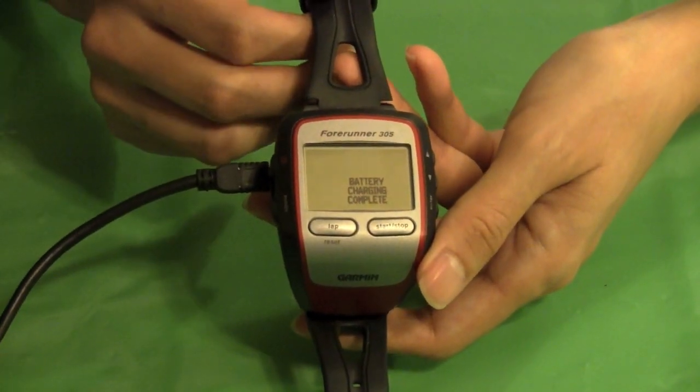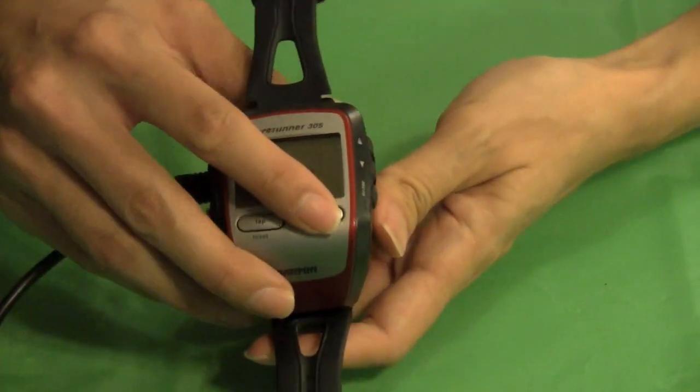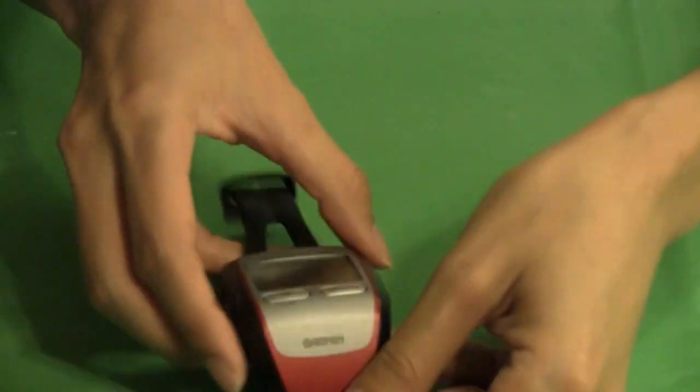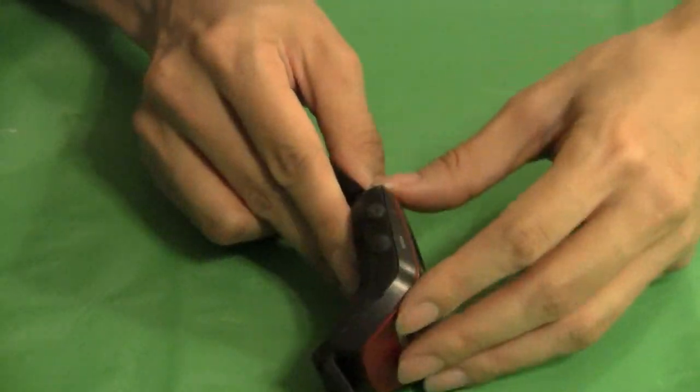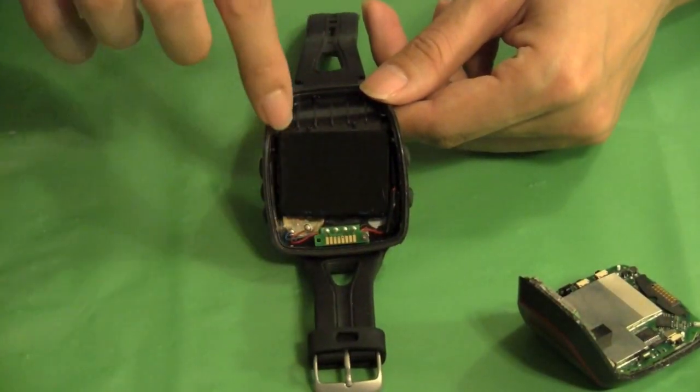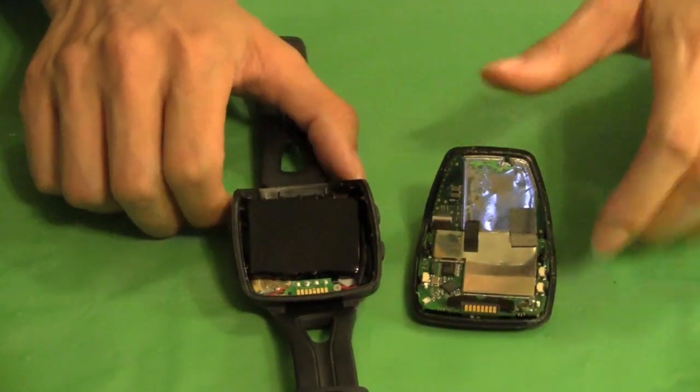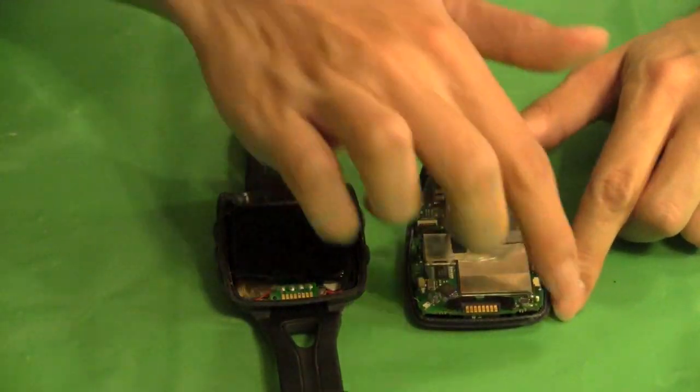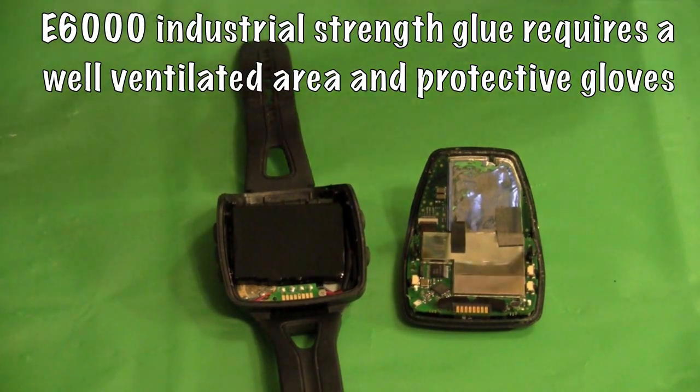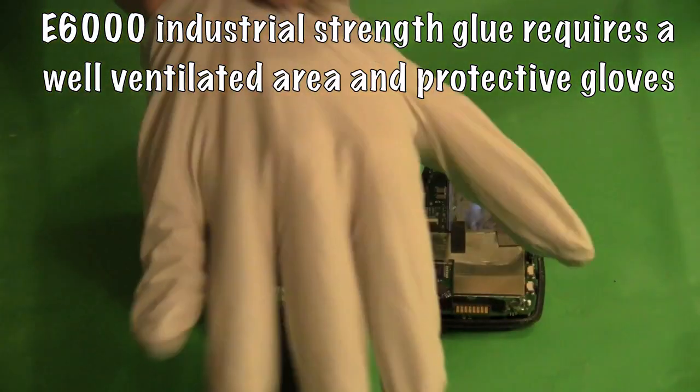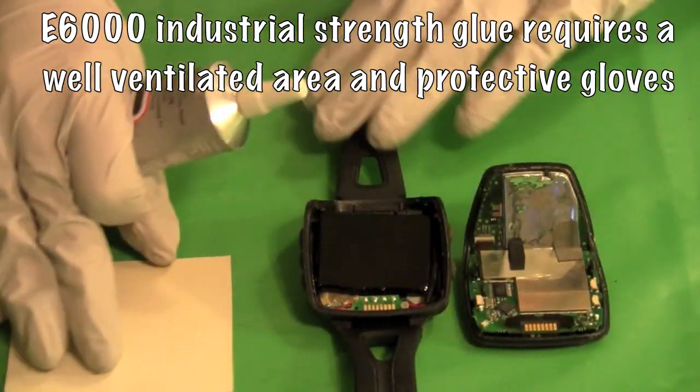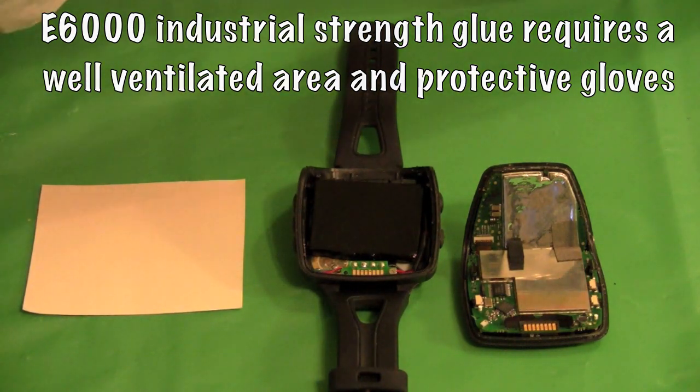Battery charge is now complete and we will remove the watch from the cradle. Put that aside and then we're ready to glue this watch back together again. What I'm going to try to do is just keep the glue on the inside rim and this E6000 glue I'll be using also requires me to put glue on the inside on both surfaces. So to get started, I will put my gloves on and I've got a little piece of paper that I'll be using to put this E6000 glue on.